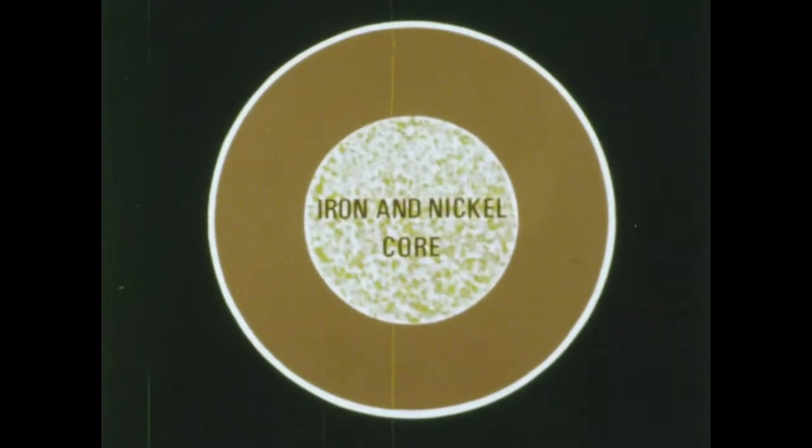This is a diagram of the earth as it might look if you sliced it in half. The earth is made up of at least three different kinds of rock materials. In the center, there is a solid, very heavy iron and nickel core about 6,400 kilometers across.